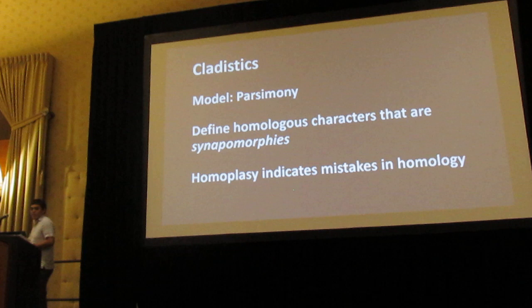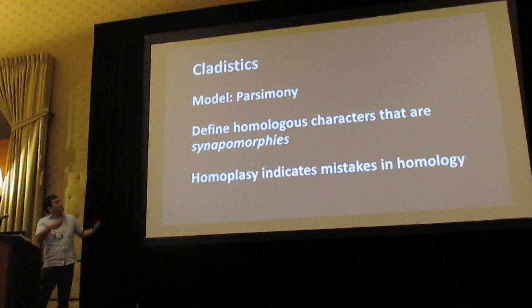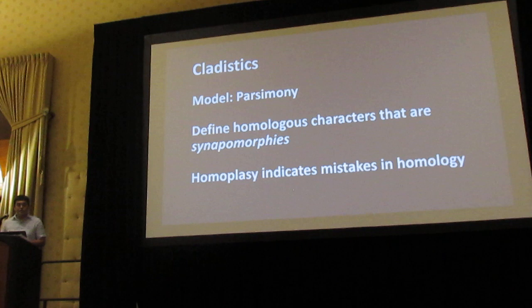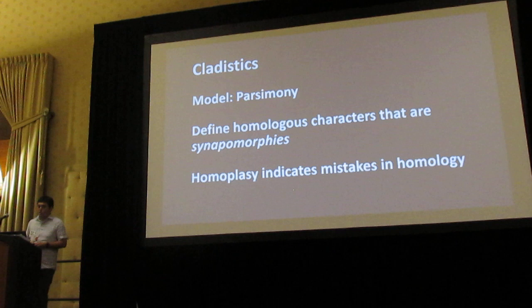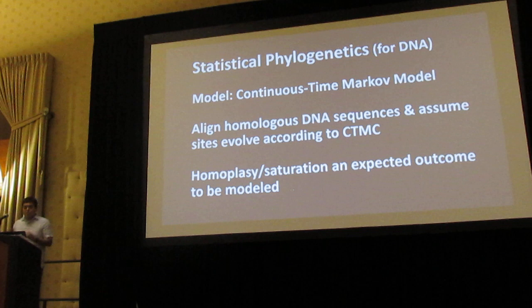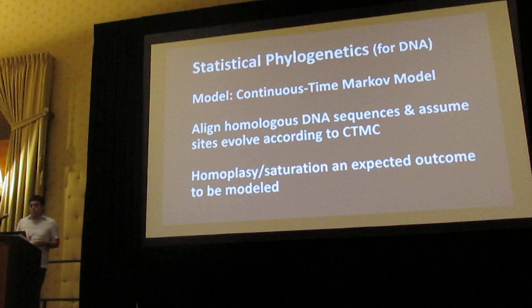Looking at the history of models we use in systematics: we have parsimony, where our goal is really to define synapomorphies — homologous characters that define clades above nodes, and homoplasy indicates mistakes in homology. When we went to statistical phylogenetics for DNA, we have continuous-time Markov models like the GTR model. We align homologous DNA sequences and assume sites evolve according to this process, and homoplasy is an expected outcome to be modeled.